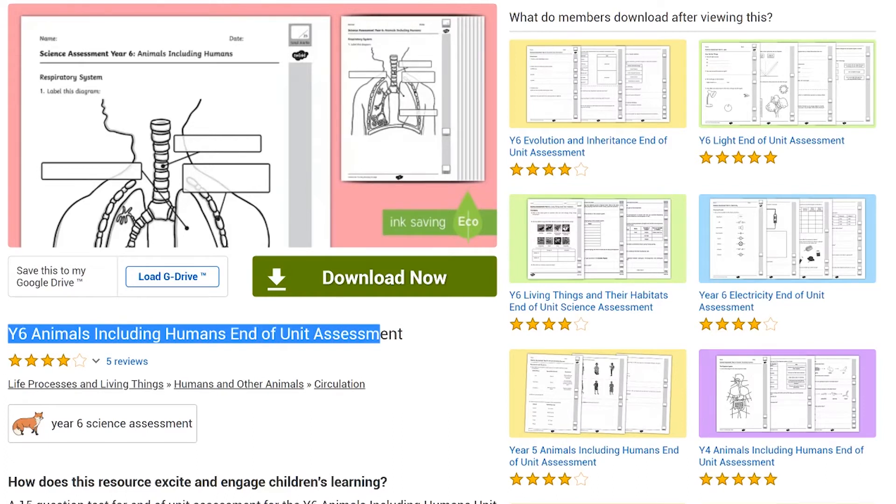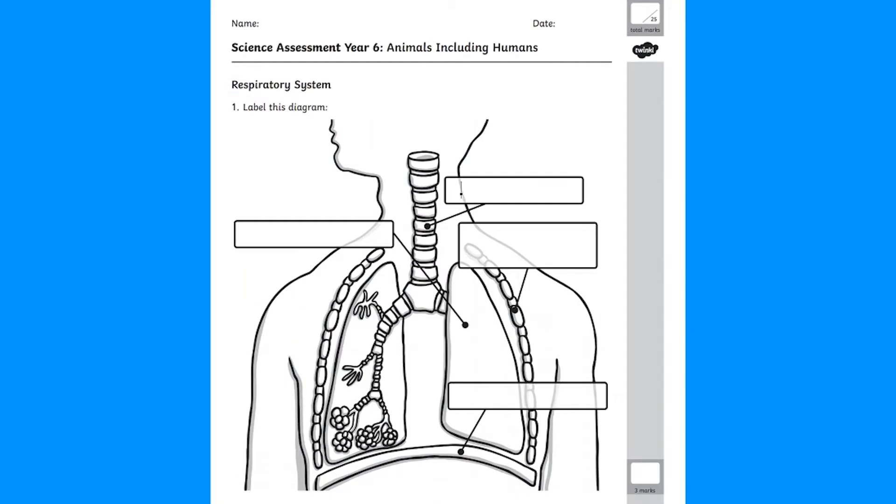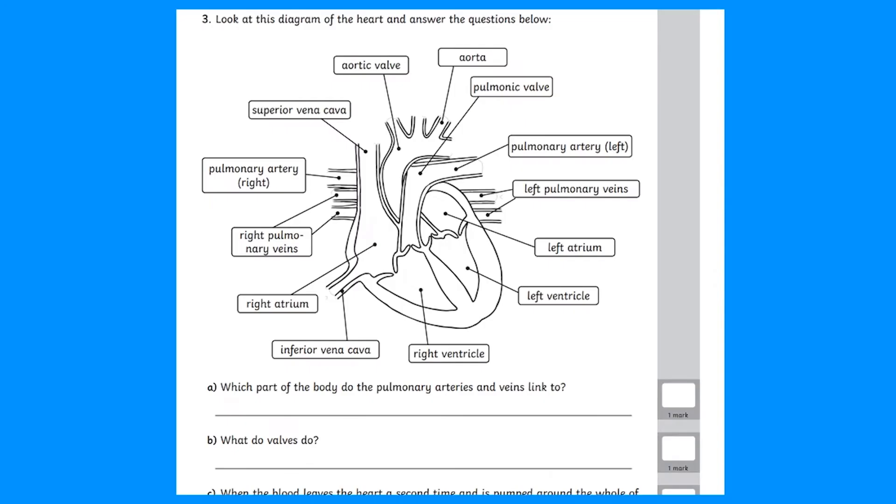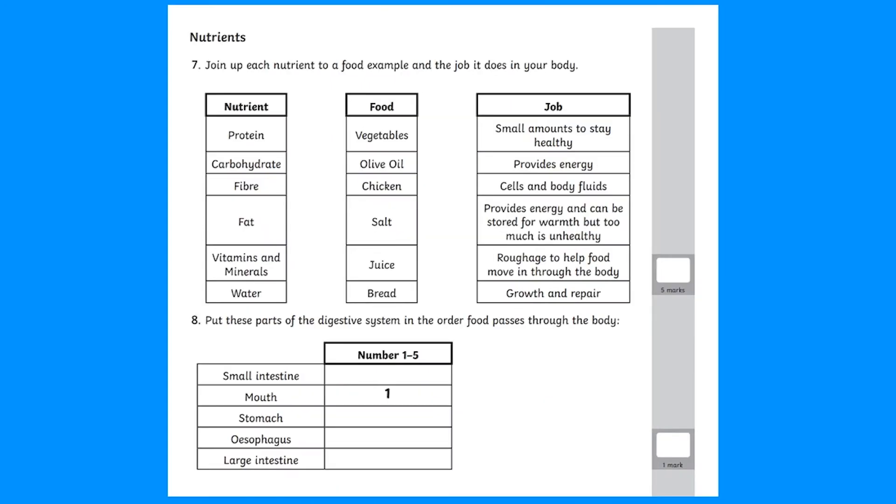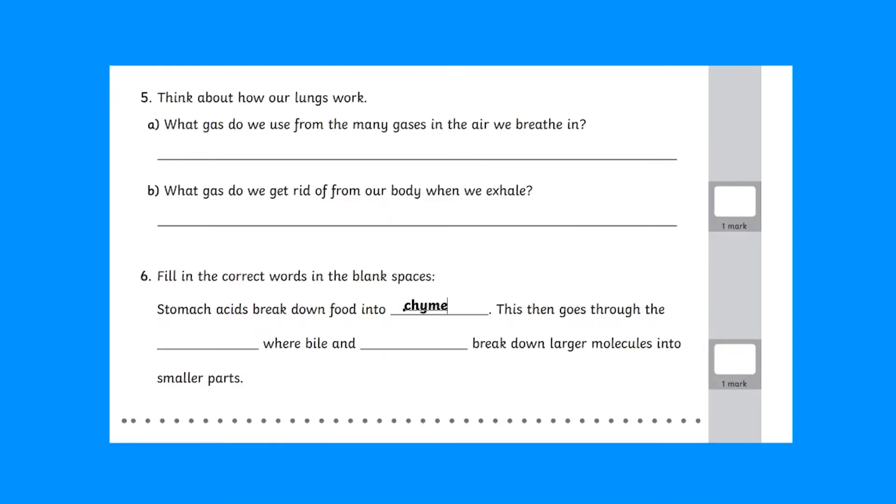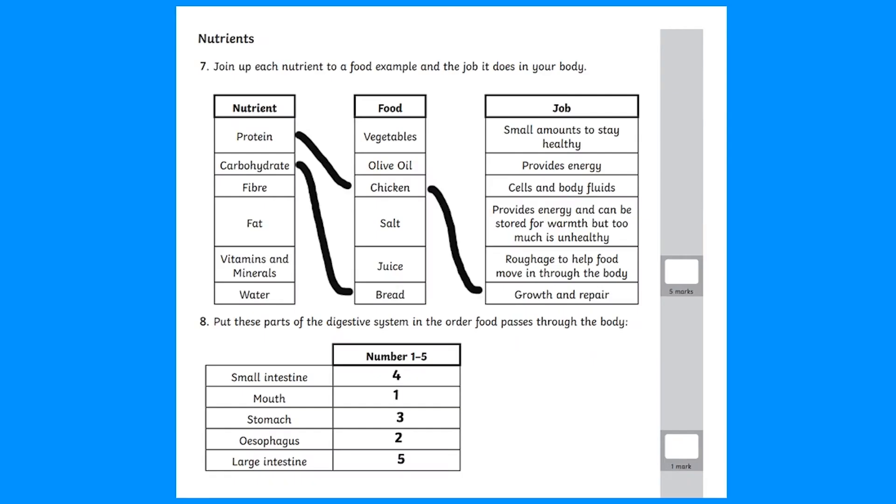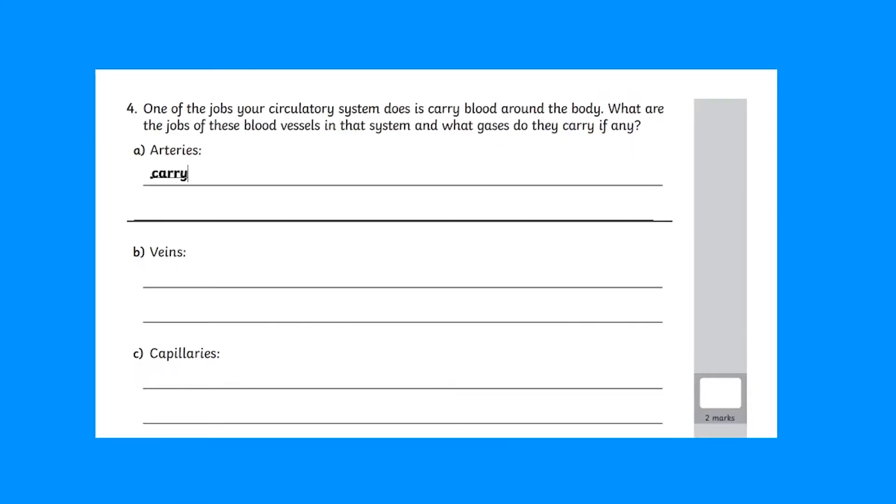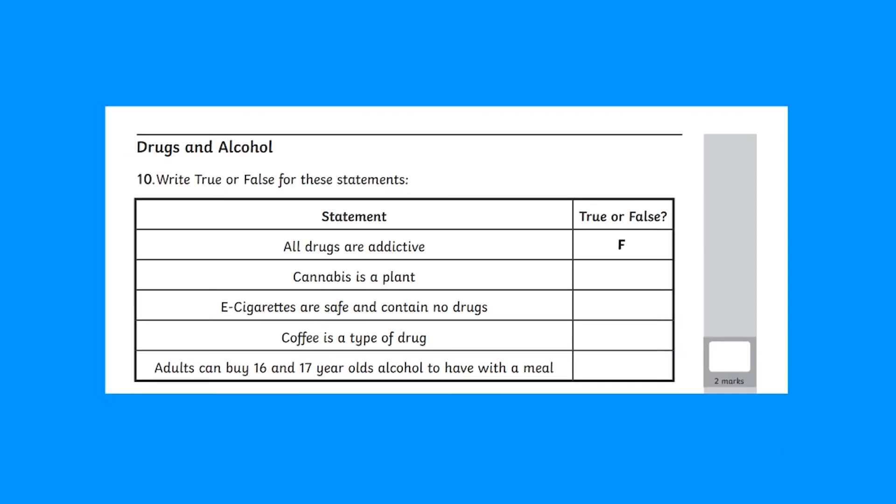Each science topic for each year group has an end-of-unit assessment to complete. In this animals and humans assessment children have to label diagrams, answer questions based off a diagram, put answers in order, fill in the blanks, join up matching pairs, explain the job of different parts of the body or give true and false answers.